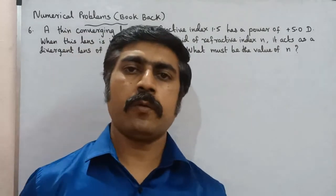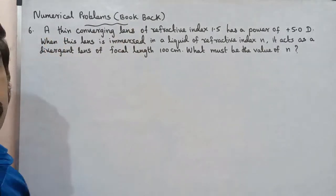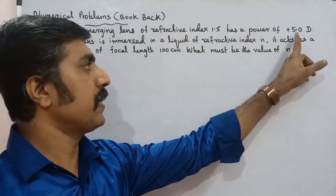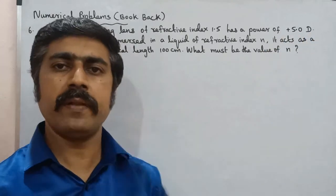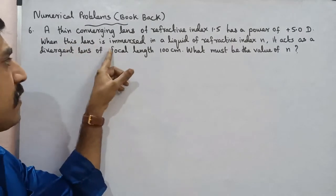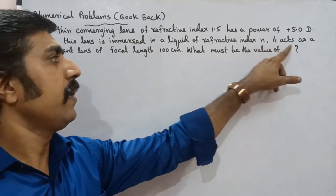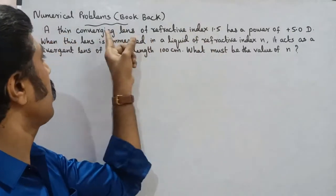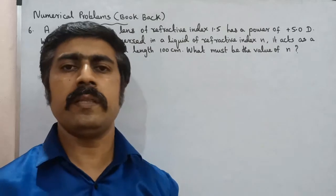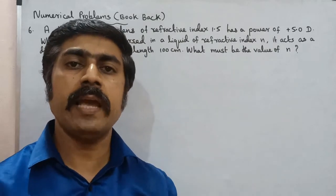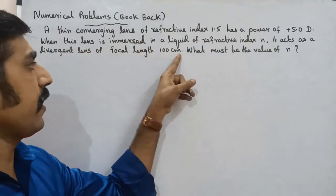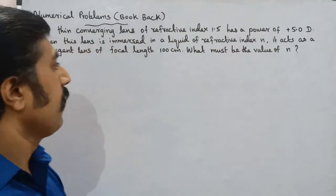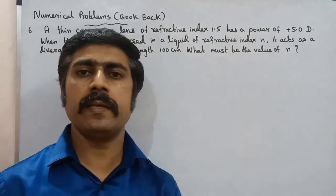Hi students, now we are going to talk about a problem. A thin converging lens of refractive index 1.5 has a power of plus 5.0 diopter. Diopter is the unit of power of a lens. When this lens is immersed in a liquid of refractive index small n, it acts as a divergent lens of focal length 100 cm. What must be the value of small n, the refractive index of the liquid?